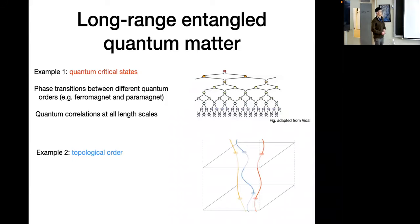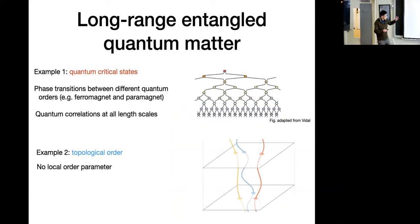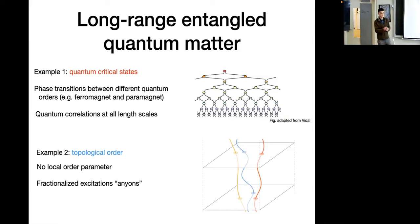Another prime example of long-range entangled matter is topological order. Unlike more trivial phases of matter like paramagnets, these have no local order parameter. Instead, one needs more subtle notions to describe them. For example, topological orders have quasi-particle-like excitations called anyons, which can be neither bosons nor fermions, and these have very interesting applications for things like topological quantum computing.